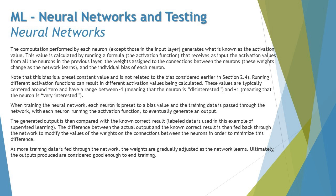As more training data is fed through the network, the weights are gradually adjusted as the network learns. Ultimately, the outputs produced are considered good enough to abort the training process. So at any point of time when you really realize that the model is able to decide very precisely or as per the expectation, you can go ahead and stop your training there and you can make a decision that this can go live now.